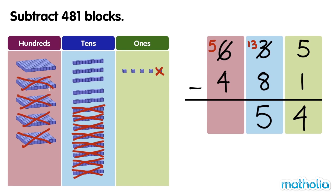5 hundreds minus 4 hundreds equals 1 hundred. There are 154 blocks left. 635 minus 481 equals 154.